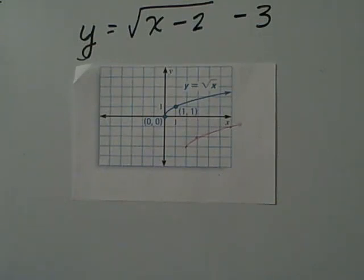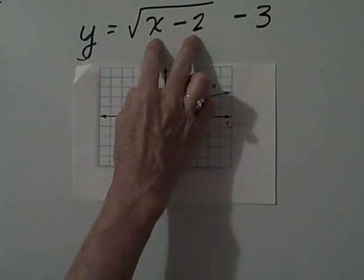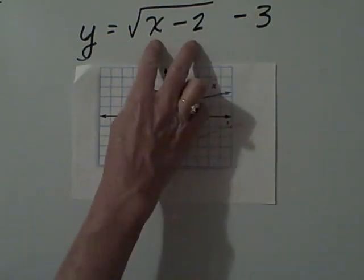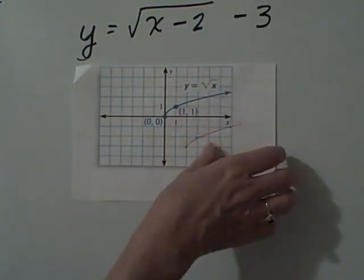The only thing you have to be concerned about is where the shift is in the numerator, under the radical, or outside the radical. Under the radical shifts it left and right. Outside the radical shifts it up and down.